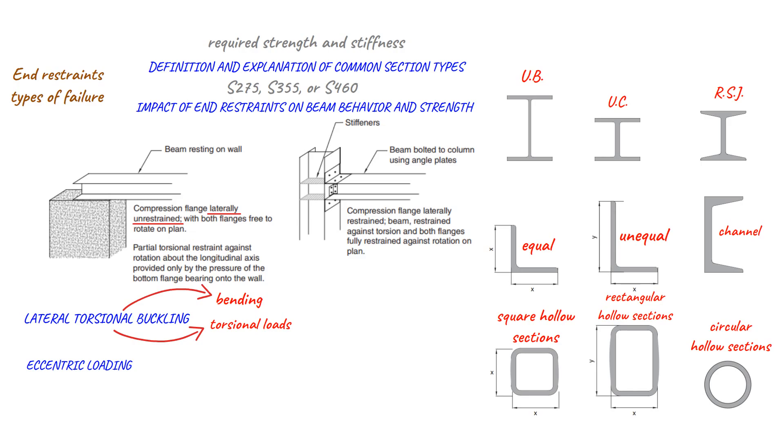Eccentric loading is another factor to consider when designing steel beams. This occurs when the load applied to the beam is not perfectly aligned with the centroid of the cross section. When a beam is subjected to eccentric loading, it will experience a twisting moment, which can cause it to fail.